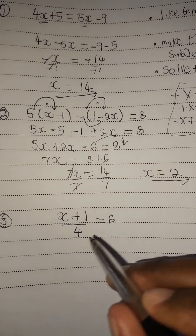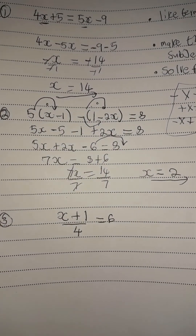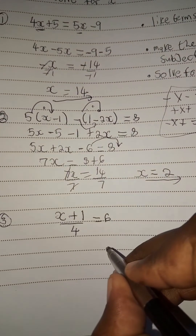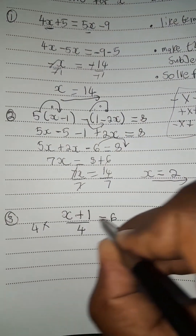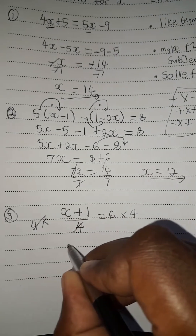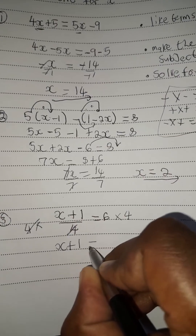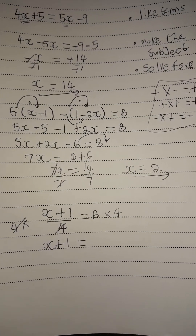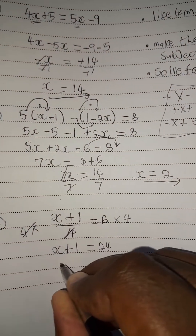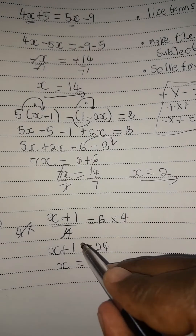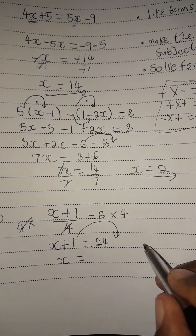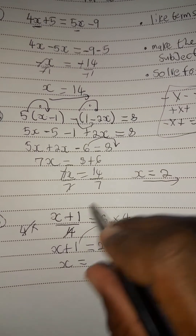So we are given a linear fraction. To make life easier in this case, there are two ways we can do this. We can multiply by 4 on both sides, which is the denominator. We multiply by the denominator of 4 on both sides, so the 4 and 4 cancel since they are common. We are left with x plus 1. Then we are going to say 6 times 4, which is 24. So we need to make x the subject. You can make x the subject by transposing 1. Since 1 is positive, when you transpose it to the other side, it changes sign — it becomes minus.